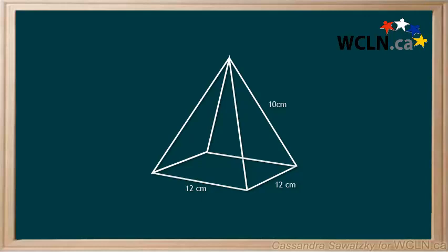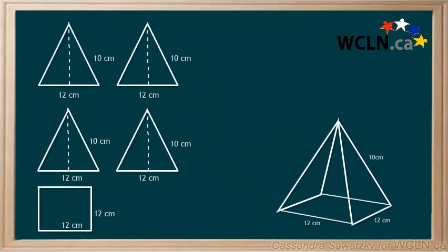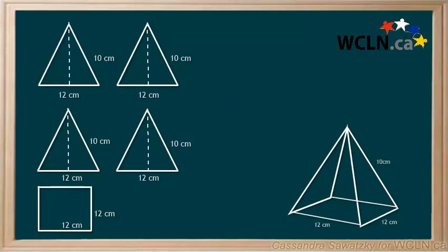First, let's break down the object and make a list of all the faces. What do you see? There are four triangles and one rectangle. And you can see that there are a couple different faces that are the same shape.